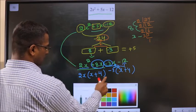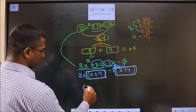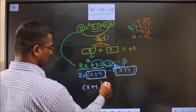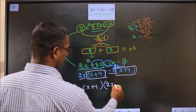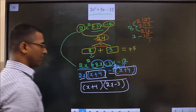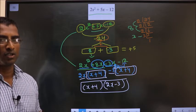Take x plus 4 common. So, what do you get? Here x plus 4 common, so here left out with 2x. And here left out with minus 3. Thus, we have factorized. This is our answer.